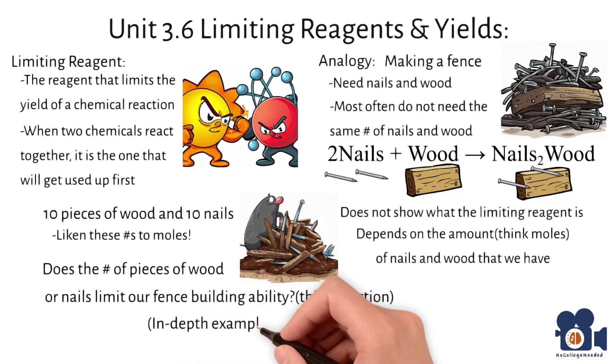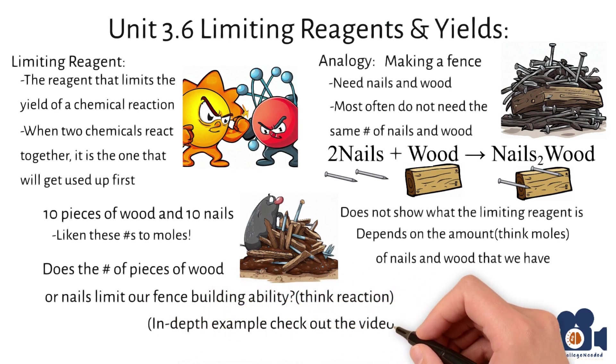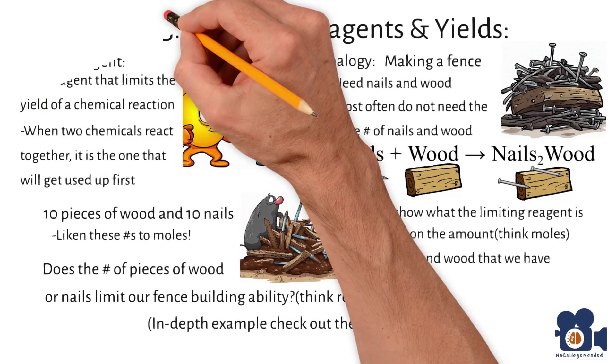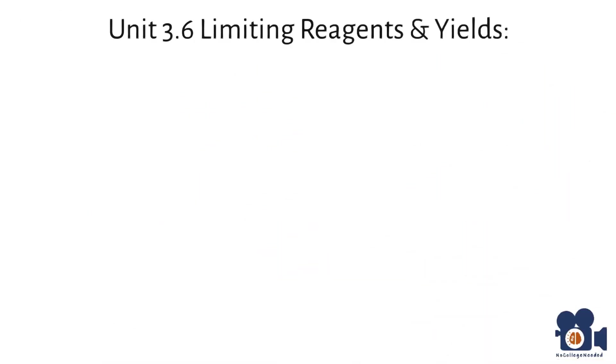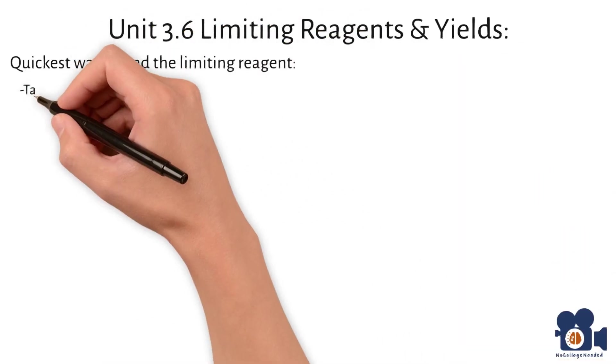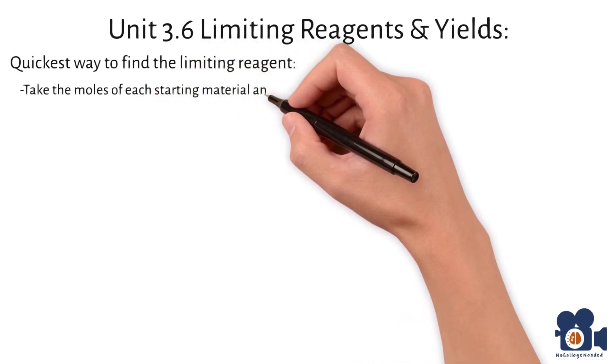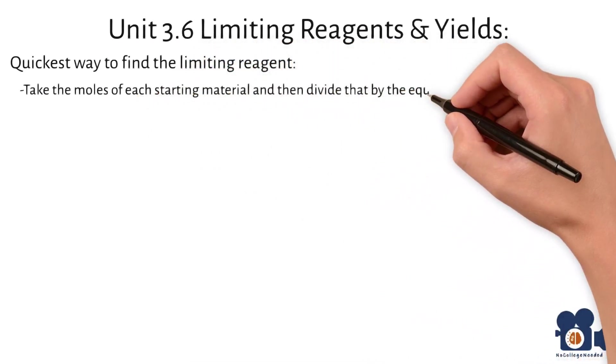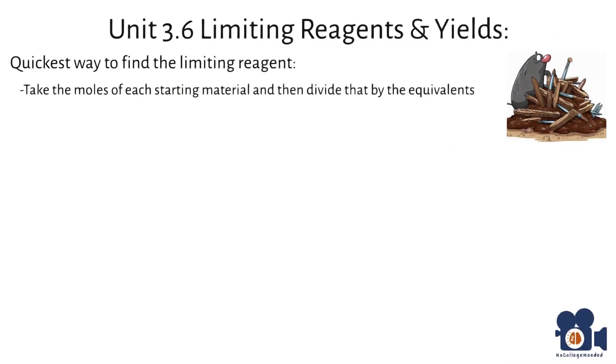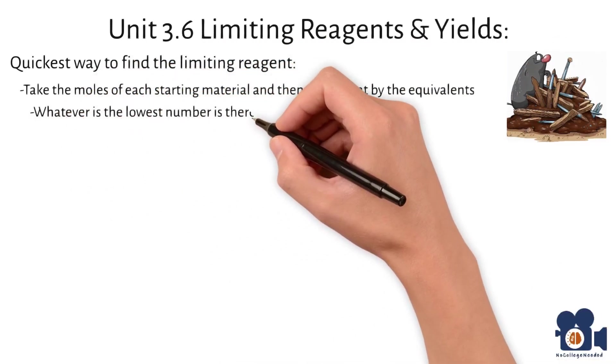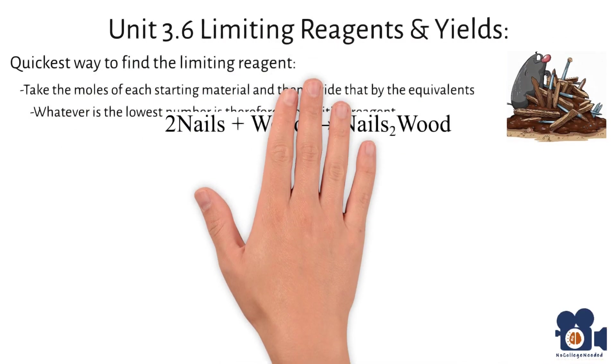To see the in-depth example of the wood and chemicals, please check out the video on unit 3.6. However, the quickest way to find the limiting reagent is to take the moles, again think amount of substance, of each starting material and divide that by the equivalents. Whatever is the lowest number is therefore the limiting reagent.